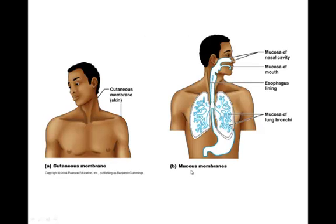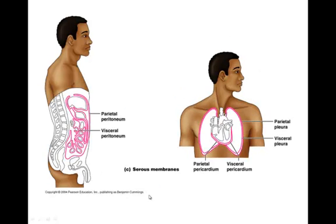Here are pictures of those membranes. Our cutaneous membrane is the dry membrane — the skin, the outer epithelial tissue with the underlying connective tissue. The mucous membranes are those that open to the outside of the body, such as our respiratory tract: the lungs, trachea, larynx, and out the nose. And the digestive system — the mouth, esophagus, stomach and so forth. And here are the serous membranes, named according to the body cavity they're in and the organ that they surround.